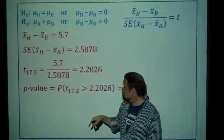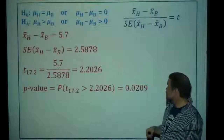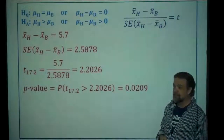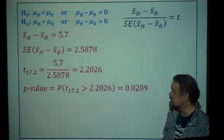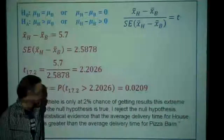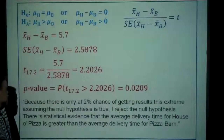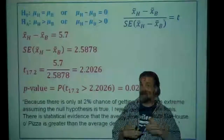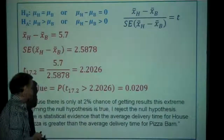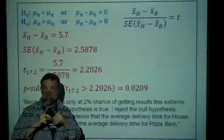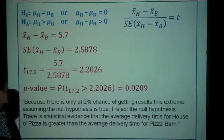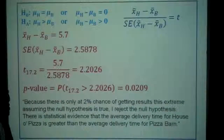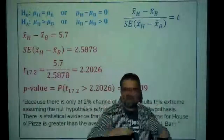The probability that a t-statistic with 17.2 degrees of freedom is that large is about 2%. If we set alpha at 5% — larger than 2% — we reject the null hypothesis. There's only a 2% chance of getting results this extreme assuming the null is true. Since this is a one-tailed test, we conclude there is statistical evidence that the average delivery time for House of Pizza is greater than the average delivery time for Pizza Barn.